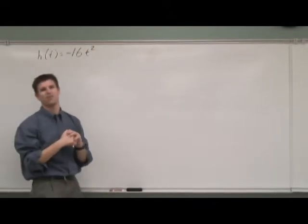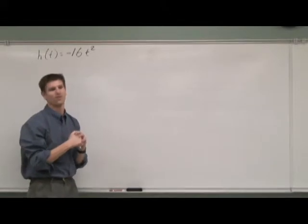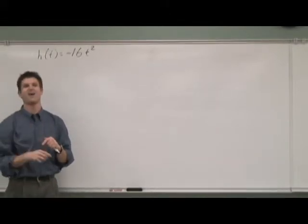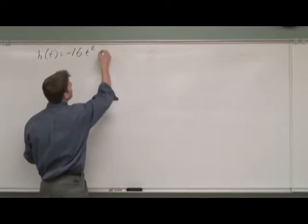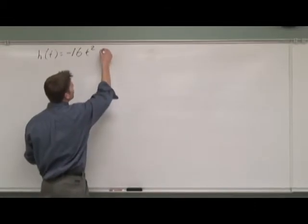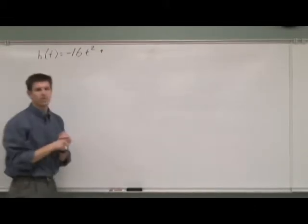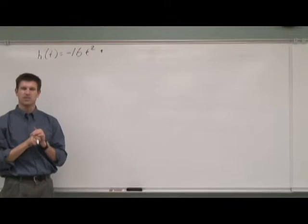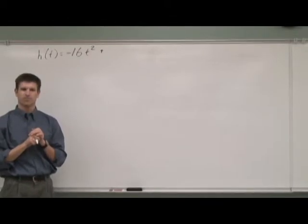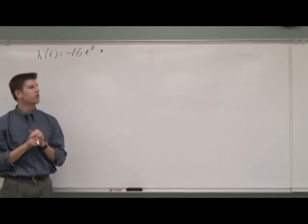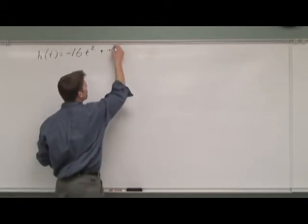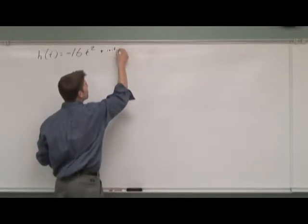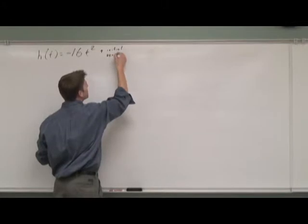Gravity accelerates at negative 32, and the negative is because you're going down. Then what you would have, if you were trying to model this, is essentially how fast your object was to start with — so you would have your initial velocity.